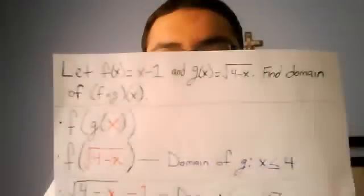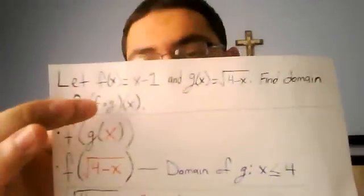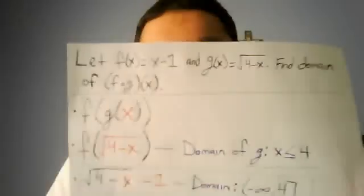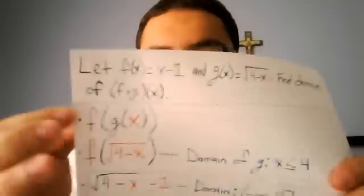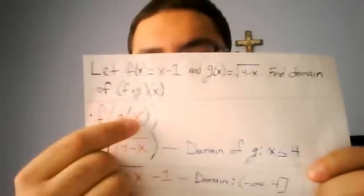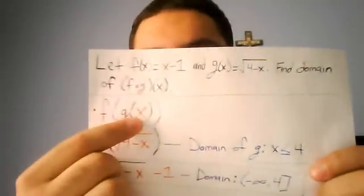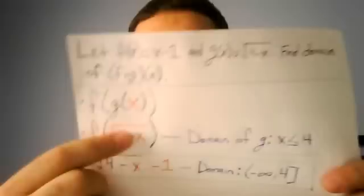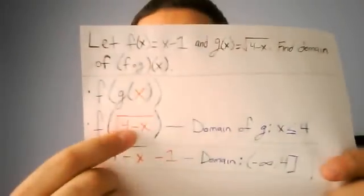Now we have to find the domain of f of g of x. So what we do is we got to find g of x first. So that's easy, you just plug in square root of 4 minus x.